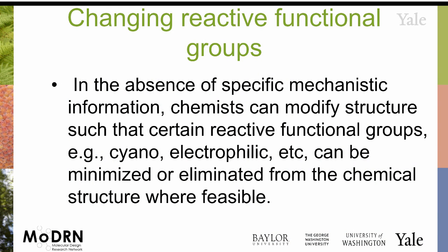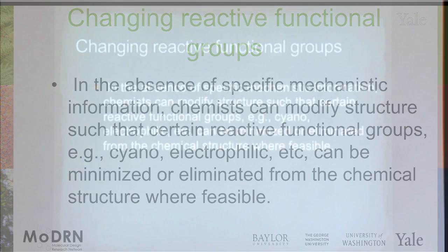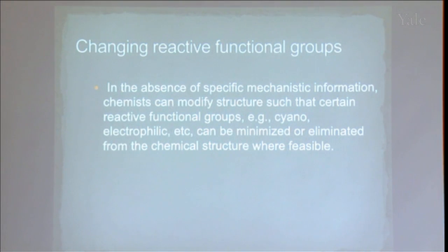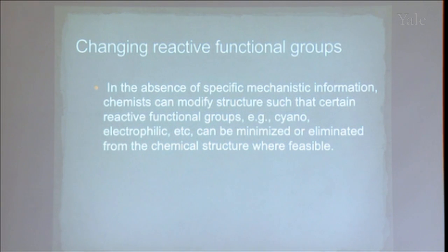With the reactive functional groups, there are whole classes of different chemicals that we know bring about toxicity. We know that certain types of electrophiles — those electron-loving molecules — are going to carry out reactions in the body. If you make something less electrophilic, if you move that electrophilic group, you're going to drastically disfavor the ability for that to happen. So changing the reactive functional group.